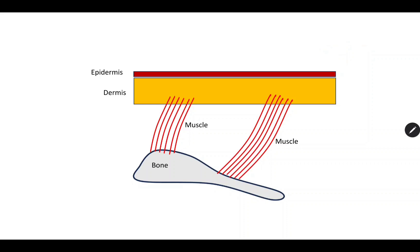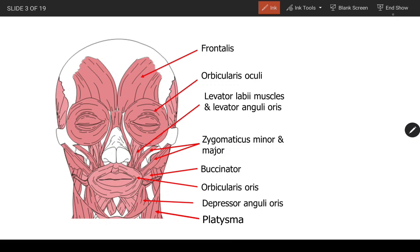Muscles of facial expression are attached to the dermis of the skin on one side and the bones of the face on the other side. Thereby, when they contract, they can move the skin of the face and change the appearance of the face, so people can express their feelings, emotions, and communicate to others. There are several muscles of facial expression; we will take a look at some of them now.